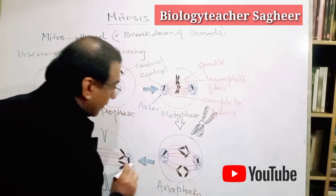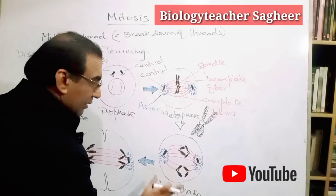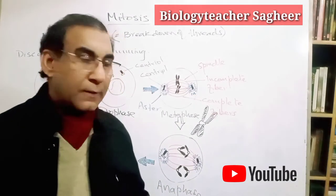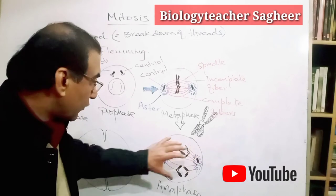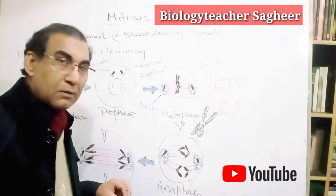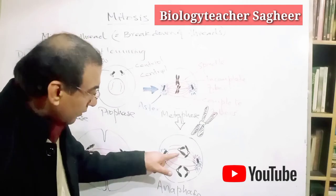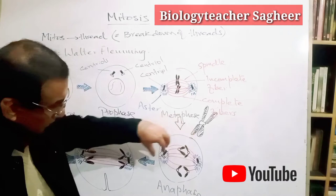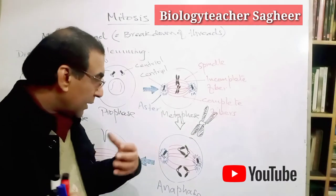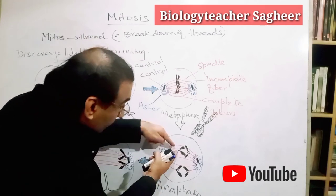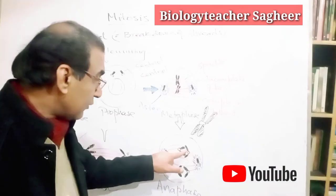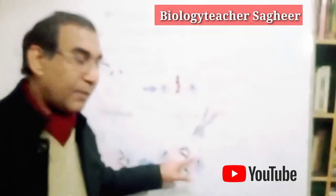In anaphase, the chromosomes start moving towards the opposite poles of the spindle. Here you can see the centromere is attached with an incomplete fiber, and the chromosomes are moving towards their respective poles.